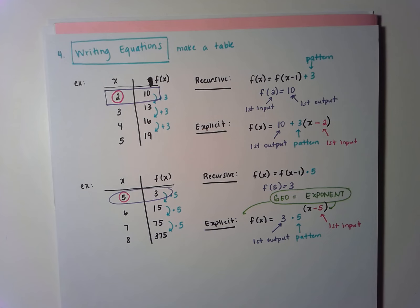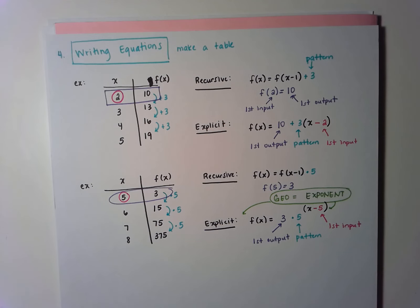That covers the big ideas on the assessment. There are other things such as choosing whether explicit or recursive is more efficient, and explaining the meaning of the common difference or common ratio. But this is the biggest chunk of the assessment. I'm hoping that by going over this again and writing it all down, it will help you be prepared for the actual test. I expect you to write this down in your packet so that you have it as a study tool. Thank you so much for watching and I look forward to seeing your assessment.